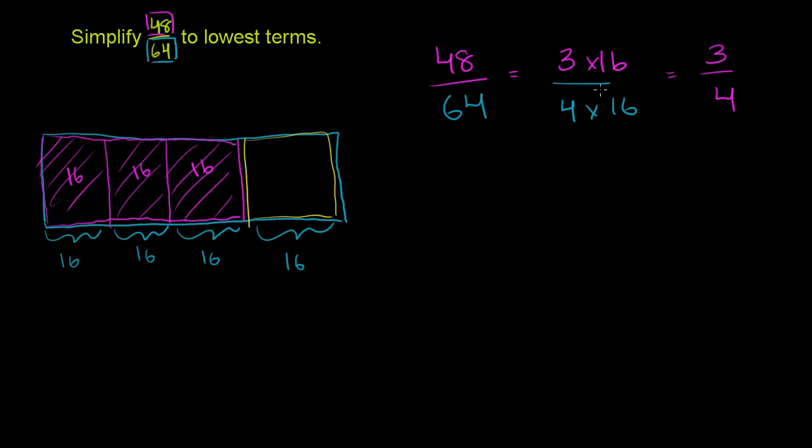And hopefully you see a mathematical way of immediately thinking about it. If you can factor this out, and you can actually factor out its greatest common factor. So 48 is 3 times 16. 64 is 4 times 16. And then these cancel each other out. You could view this as equivalent to 3 over 4 times 16 over 16. This is the same thing as that. And 16 sixteenths is 1. And you're just left with 3 over 4.